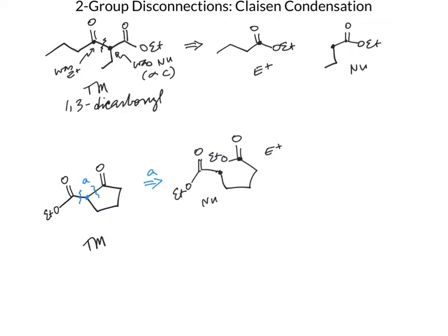How about disconnection B? That disconnection would leave our ring intact. We would have cyclopentanone as one of our components — the alpha-carbon of the cyclopentanone can be made nucleophilic by deprotonation to give an enolate. Let's look more closely at the electrophile, because this is interesting: we want this carbon to be electrophilic, but we want to maintain the carbonyl.